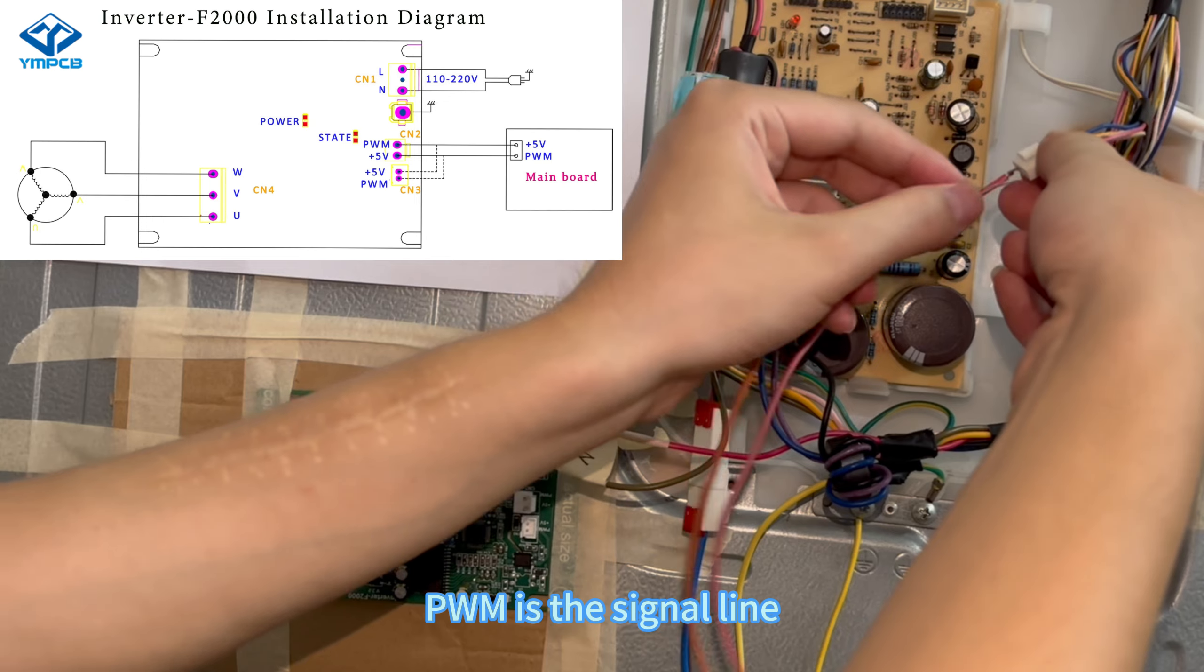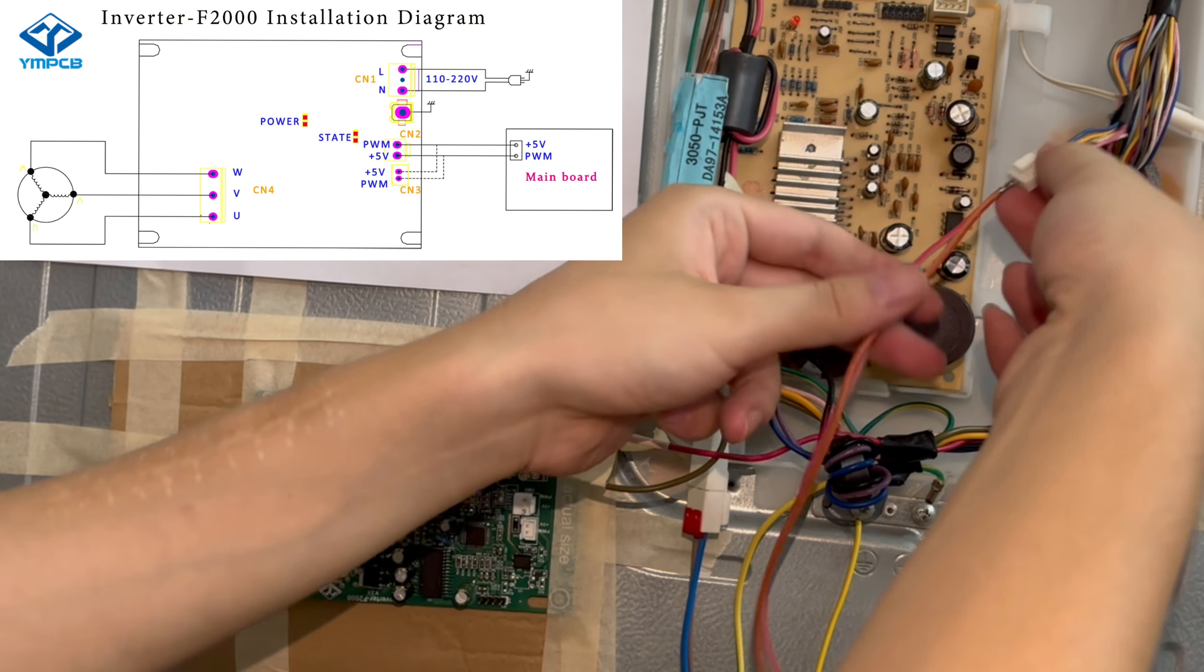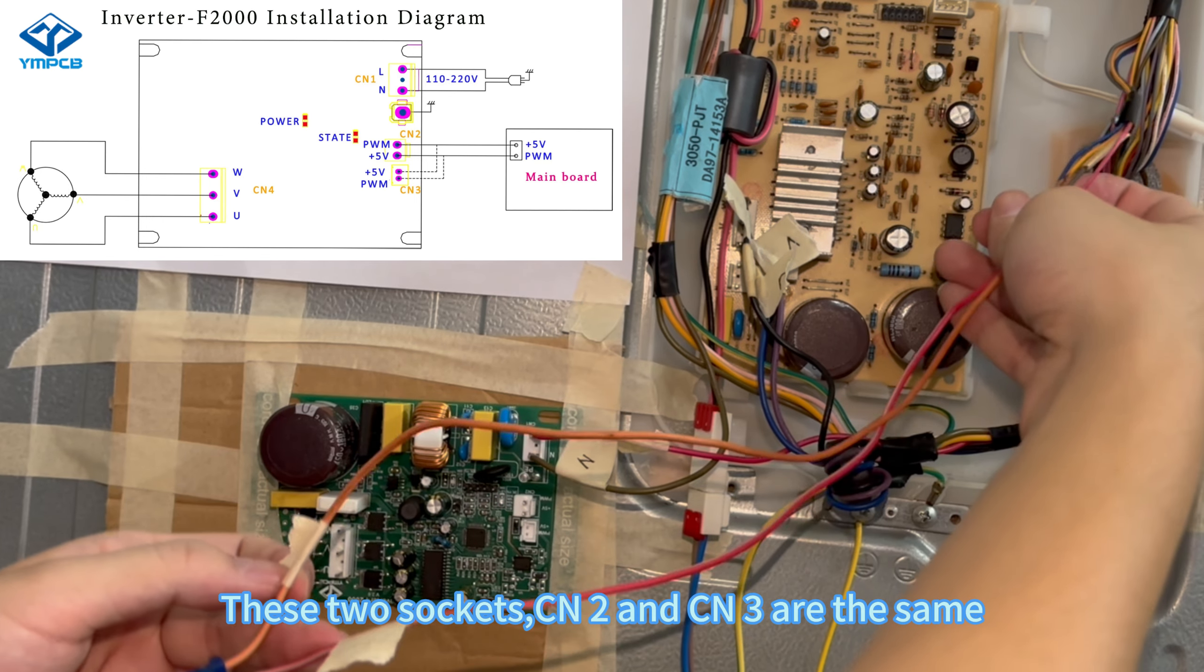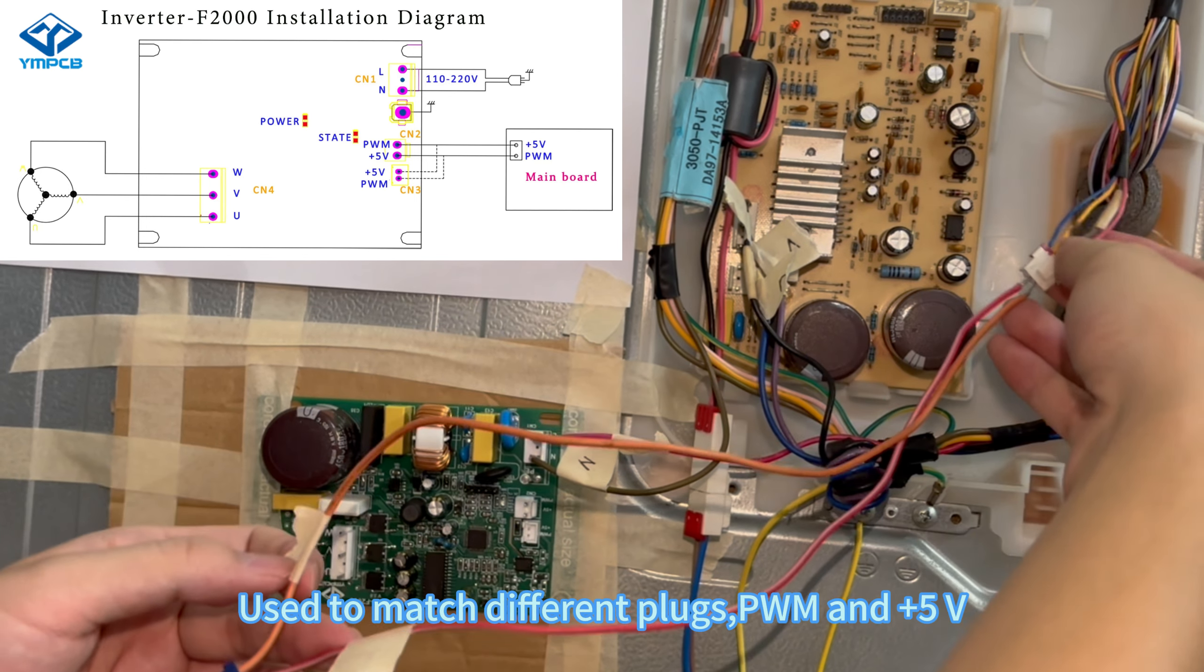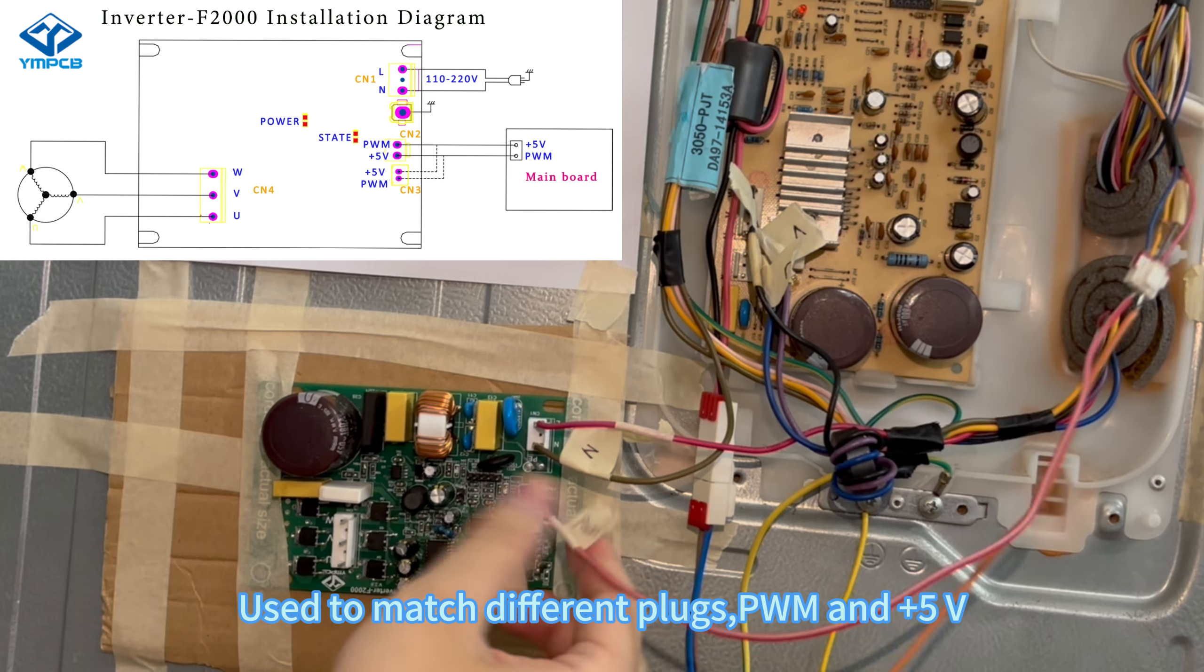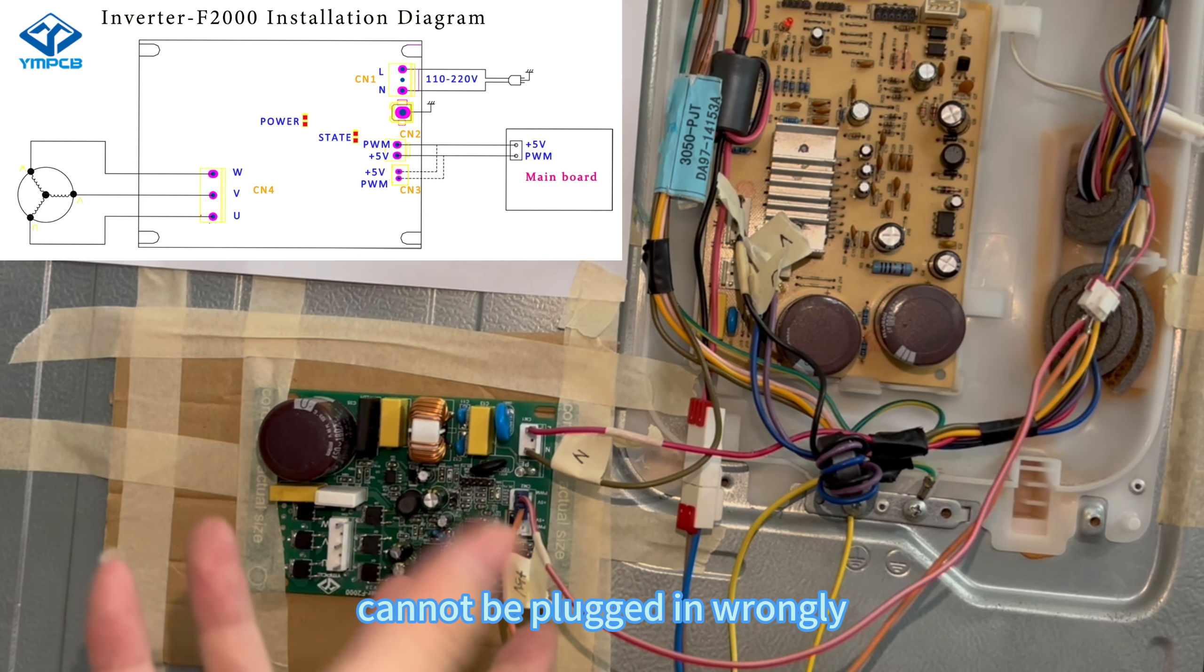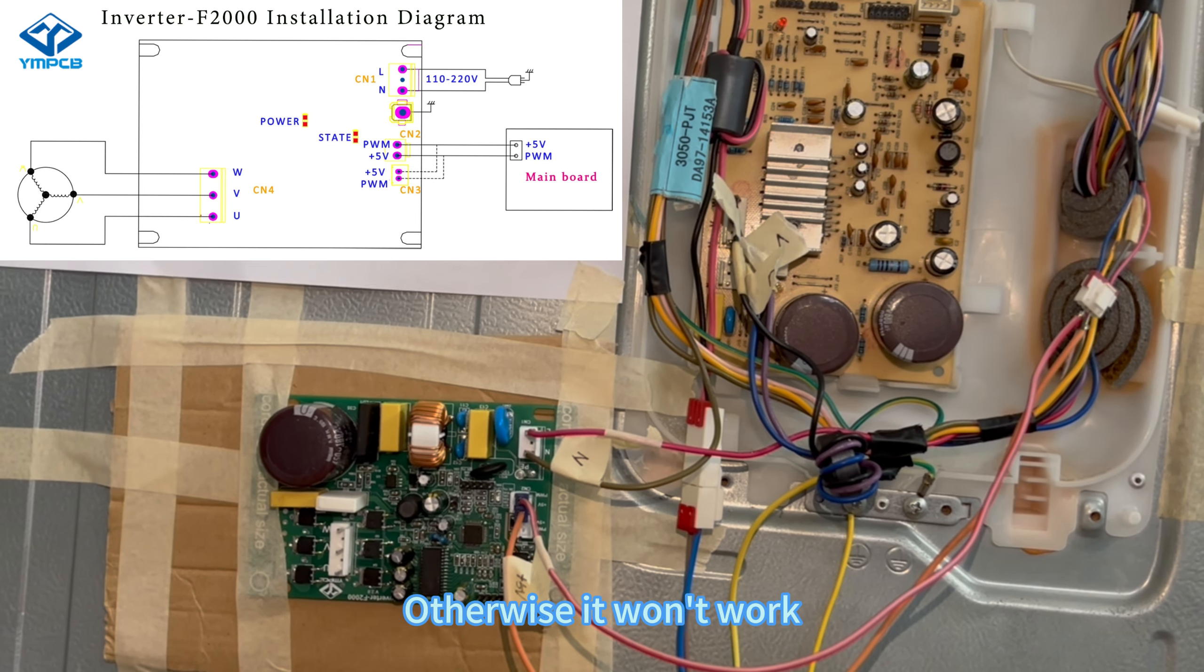PWM is the signal line. These two sockets, CN2 and CN3, are the same and are used to match different plugs. PWM and 5V cannot be plugged in wrongly, otherwise it won't work.